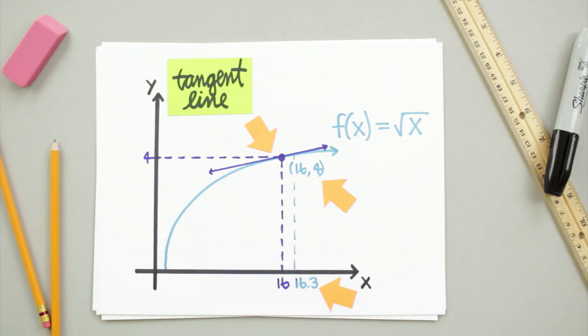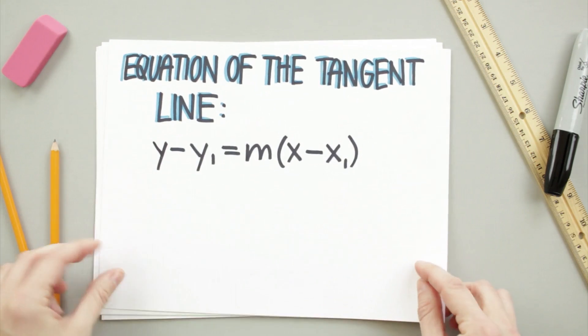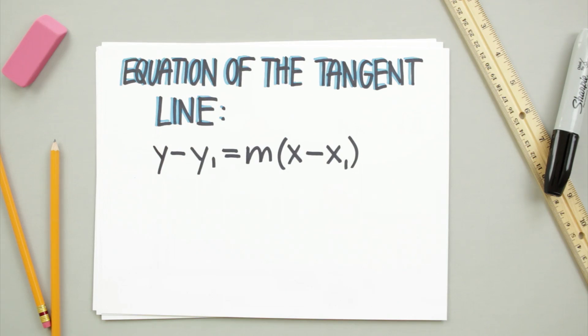Finding the equation of that line is just a matter of recalling the point-slope formula and plugging in the information we have. The point-slope formula, remember, gives us y minus y1 is equal to the slope multiplied by x minus x1.